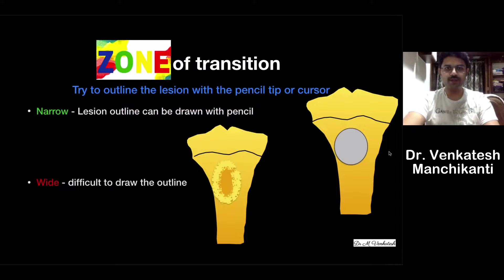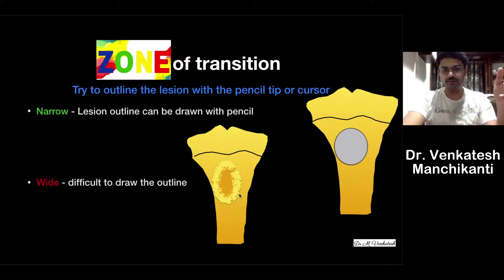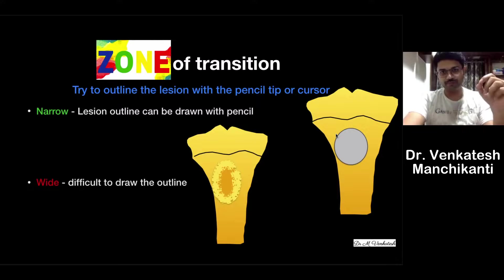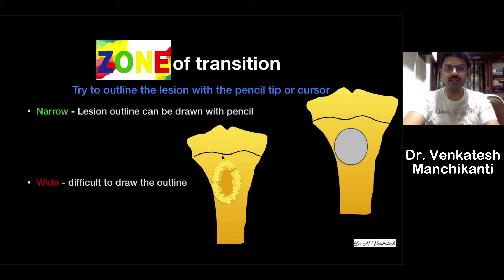The zone of transition is determined by trying to outline the lesion with a pencil tip or cursor. If it is a narrow zone of transition, you can clearly outline the entire lesion. If it is a wide zone of transition, you cannot exactly outline the lesion — it merges and camouflages with the adjacent host bone, and you cannot pinpoint the boundaries. This classification applies mainly to lytic lesions.